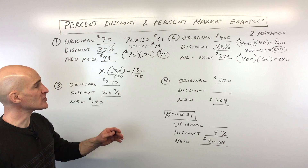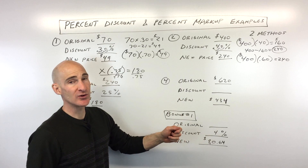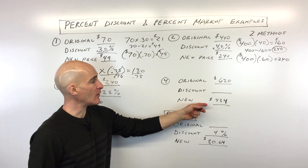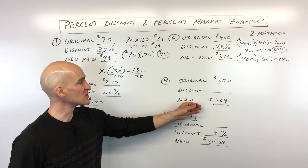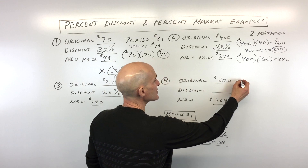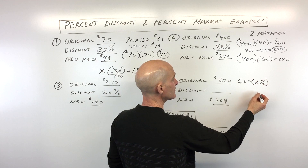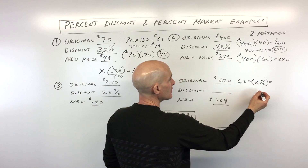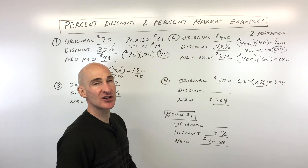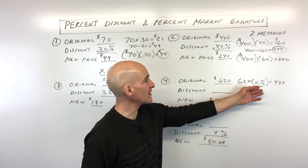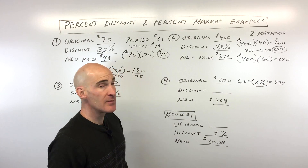Let's do number four: the original price is $620 and the new price is $434, but we don't know the discount percentage. Write an equation: $620 times X equals $434, where X is the percentage you're paying of the original price.